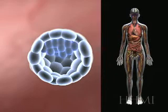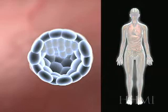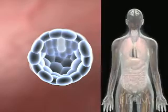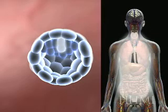The inner cell mass gives rise to the entire adult animal — in this case, a human. This same process would occur in a mouse, as we'll see a bit later.